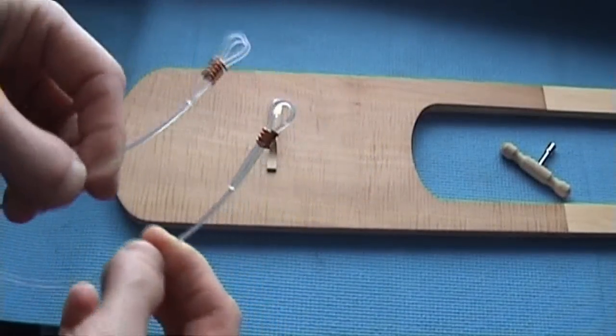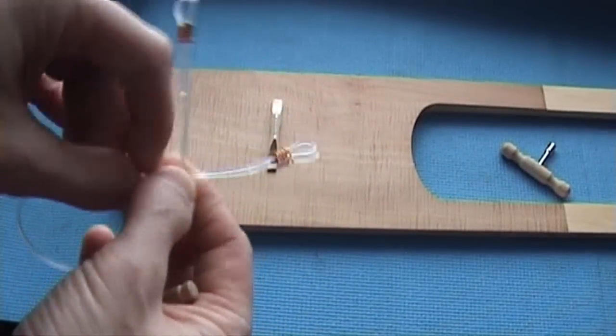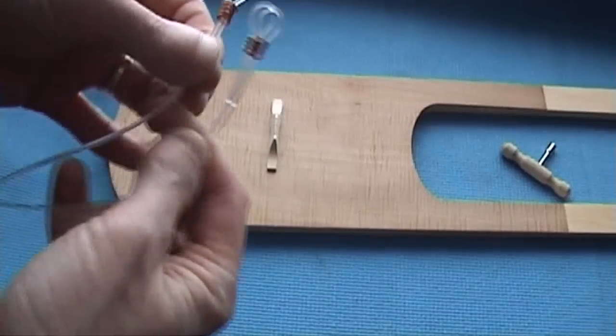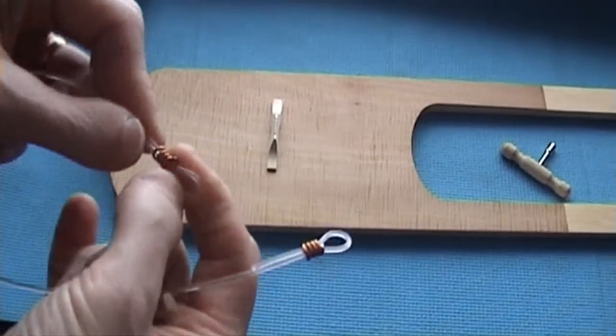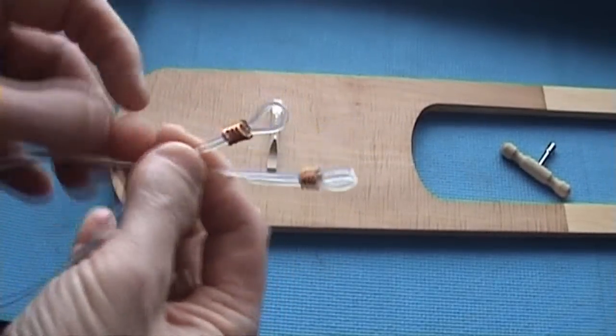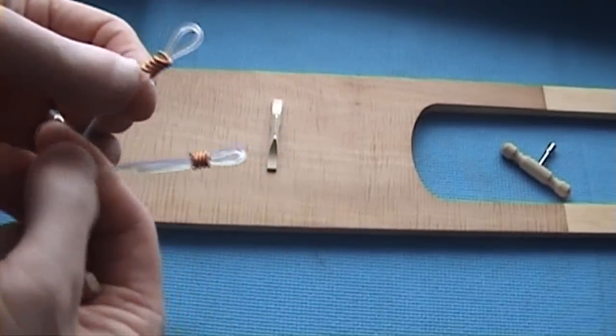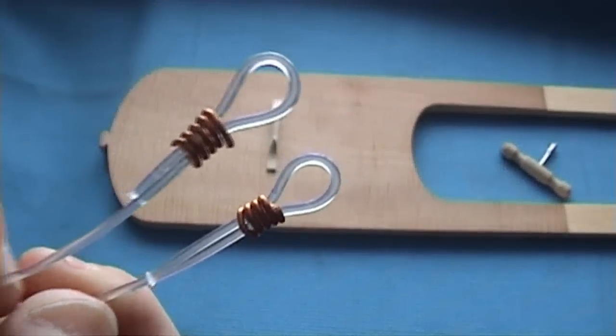We've got our tailpiece gut. This is synthetic nylon, about 1.8 to 1.9 millimeters. It's tied with copper wire, very simple. It's glued as well as tied at the end.